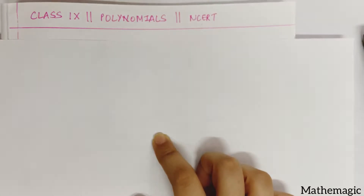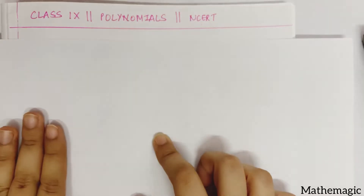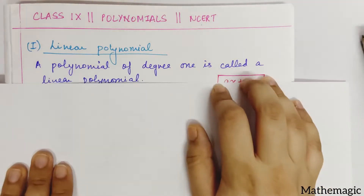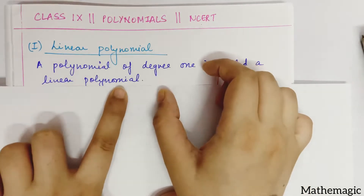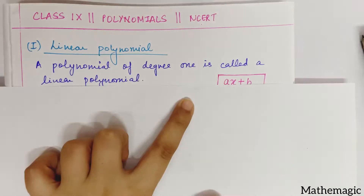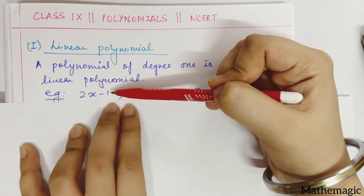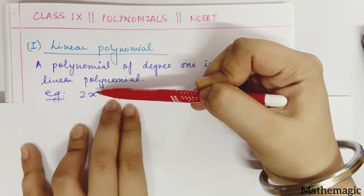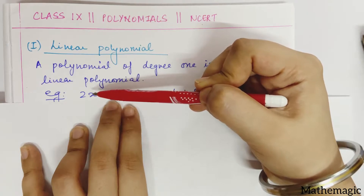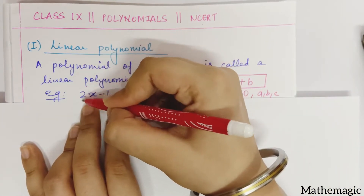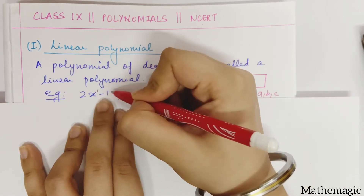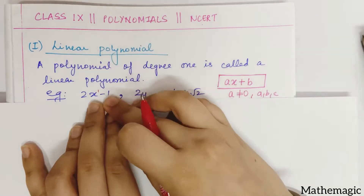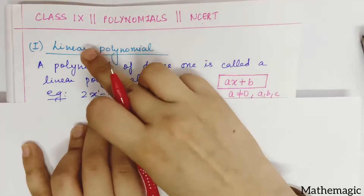Now we can understand what linear polynomials, quadratic polynomials, and cubic polynomials are. A polynomial of degree 1 is called a linear polynomial. For example, 2x minus 1. As we learned about the degree of a polynomial, the variable with the greatest exponent in that polynomial gives the degree. In this polynomial, the degree of x is 1 — x's exponent is 1. So 1 is the greatest. That means a polynomial whose degree is 1 is called a linear polynomial. Second example: 2y — y's power is 1, so that becomes the degree.